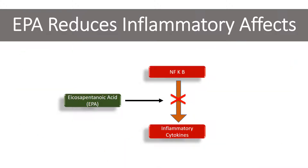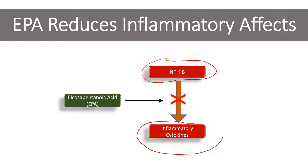Here's another effect of omega-3 fatty acids. EPA can interfere with the function of NF-kappa-B — a signaling molecule that turns on the production of inflammatory cytokines. Those inflammatory cytokines activate the immune system and turn on inflammation. EPA blocks that process, turning off the inflammatory effect of NF-kappa-B. That's another reason why fish oils containing EPA would be considered anti-inflammatory.